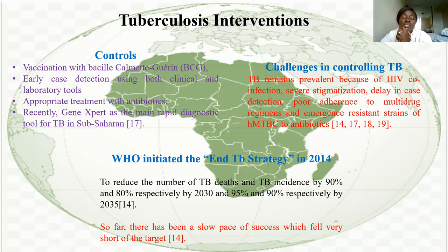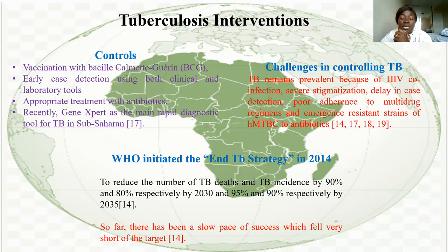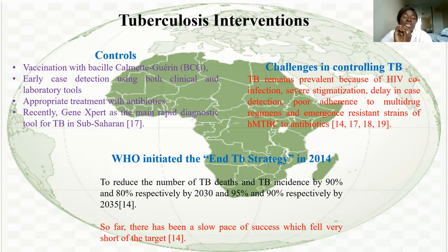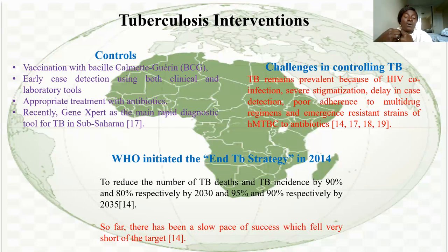WHO initiated an 'End Tuberculosis' strategy in 2014, aiming to reduce TB deaths and incidence by 90% and 80% respectively by 2030, and 95% and 90% by 2035. So far, progress has been slow, partly because TB frequently co-infects with other diseases, making control more difficult. Both diseases must be addressed simultaneously.